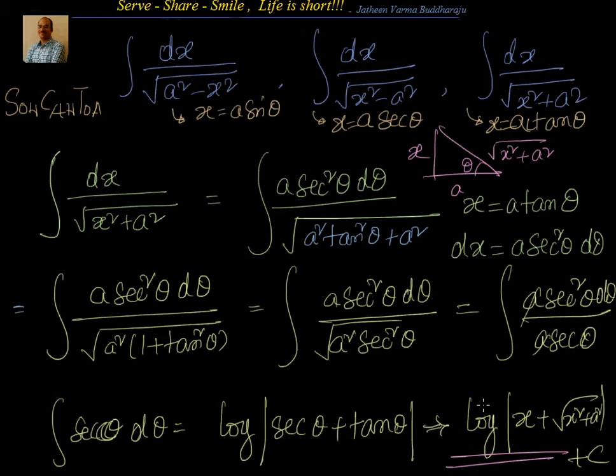Now that we have gone through all six formulas, we will try to solve problems where the given problem can be converted or transformed into any one of these six: dx by a square minus x square, dx by x square minus a square, dx by x square plus a square, or the other three with a square root on them — dx by root of a square minus x square, dx by root of x square minus a square, and dx by root of x square plus a square. We will see those in the coming sessions.